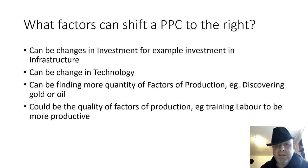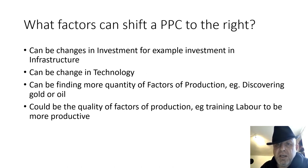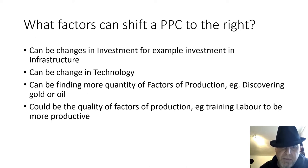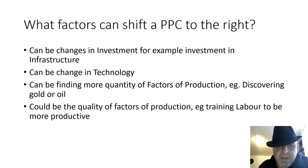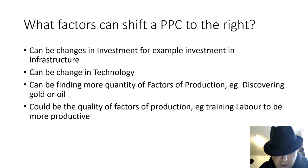What factors can shift the PPC to the right? It can be changes in investment — investment in infrastructure like opening a new port or building new airports makes the economy more efficient and the PPC shifts outwards. It could be changes in technology: finding new technological methods, utilizing artificial intelligence or robotics, makes the economy more efficient. It could also be finding more quantity of factors of production, like discovering oil or gold reserves, or improving the quality of factors of production by training labor to be more productive.